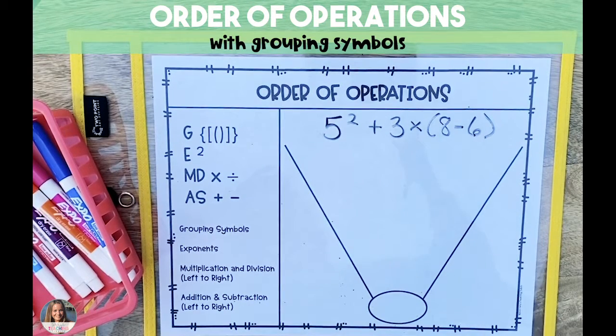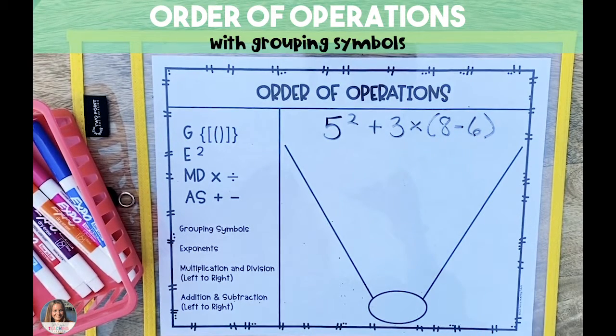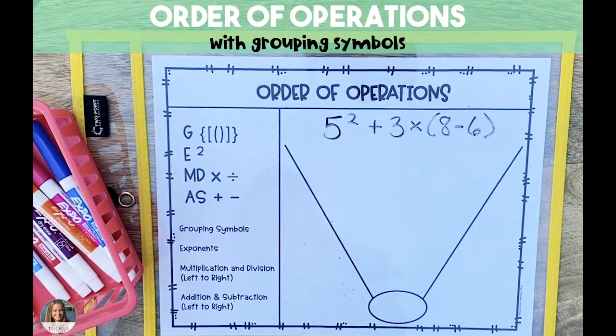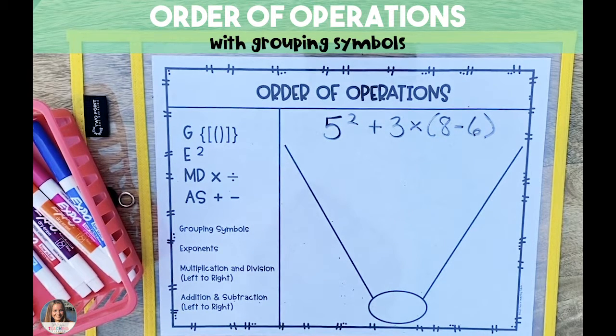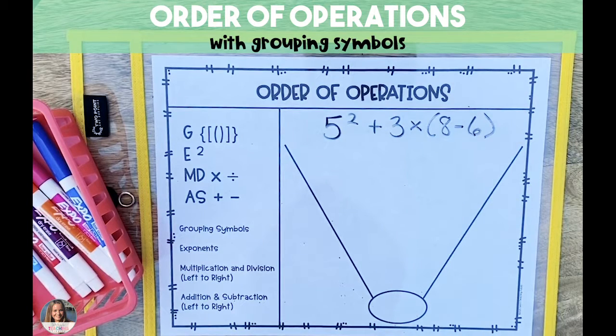The first order of operations problem that we're going to look at uses parentheses. In order to solve this problem, we're going to use the strategy of PEMDAS, which stands for parentheses, exponents, multiplication and division from left to right, and then addition and subtraction from left to right.